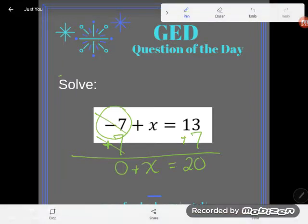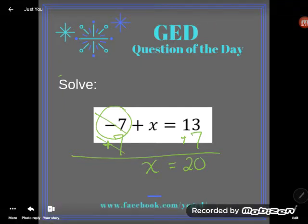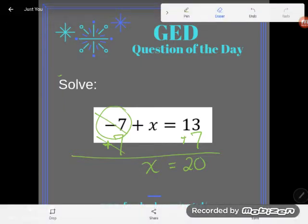But let's think about if you have zero plus X. Well, if you have zero plus anything, like zero plus five is five. Zero plus 11 is 11. Zero never does anything when you add. So zero plus X is just X. And so we end up with X is equal to 20.